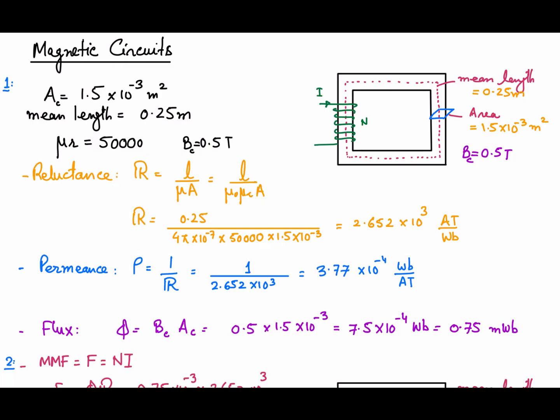In this video we will discuss some magnetic circuit examples and try to understand magnetic circuits through examples. A magnetic circuit is shown consisting of a core and a winding in which current i is injected, establishing a magnetic flux in the core structure. Let's suppose that flux is phi.